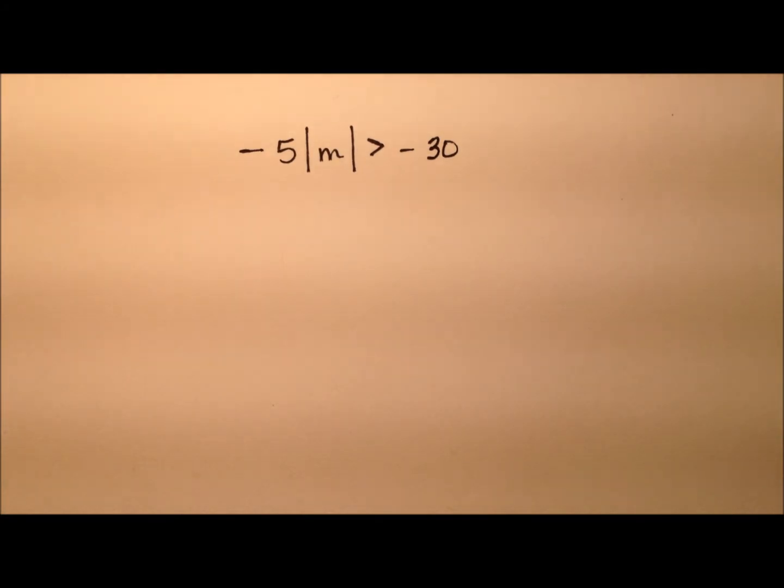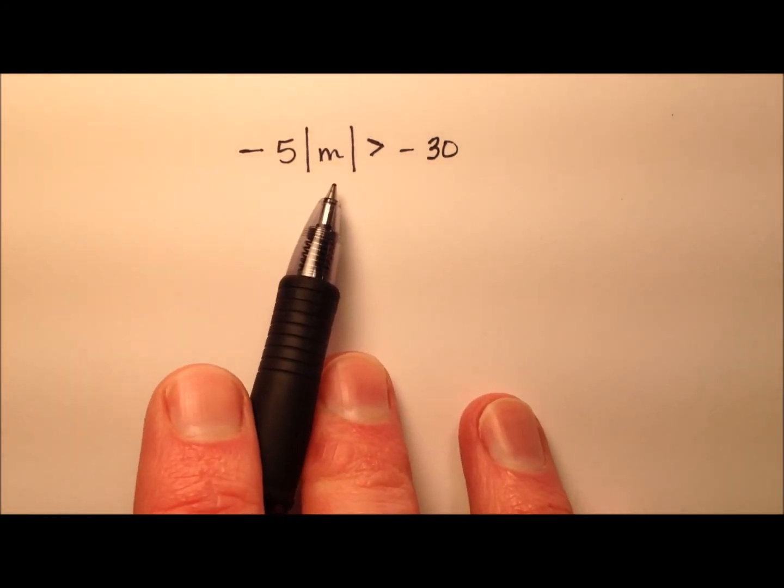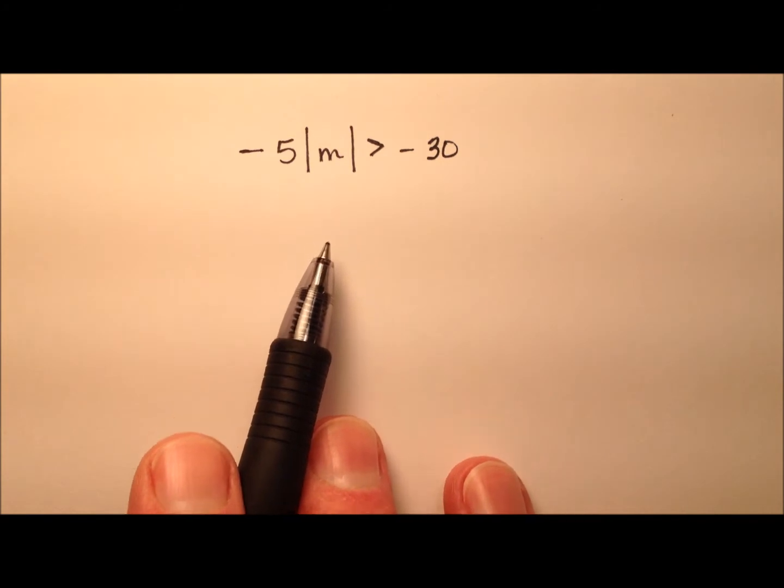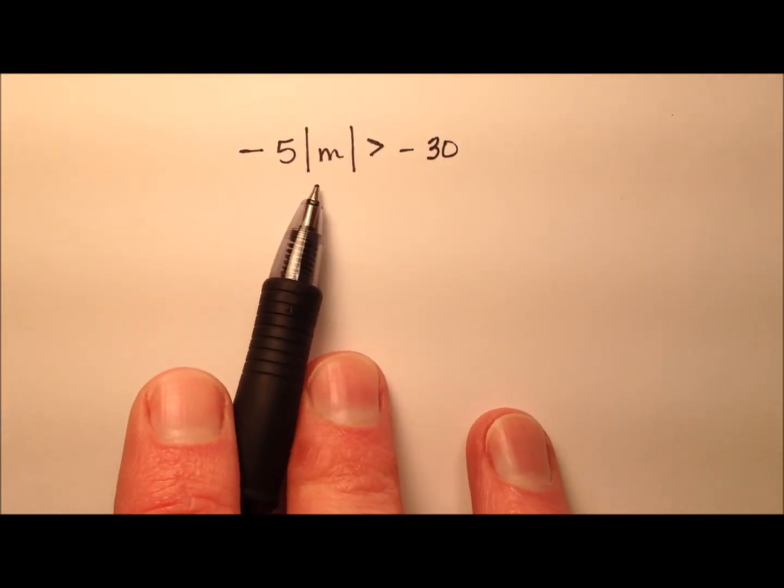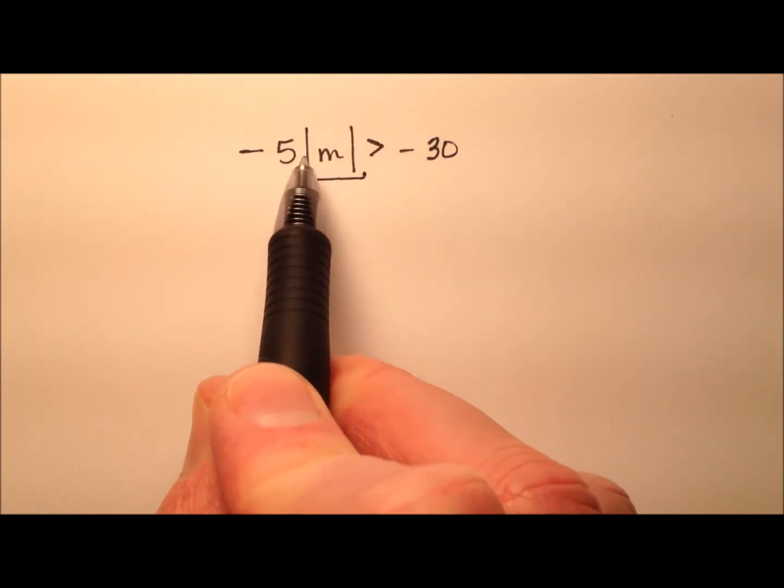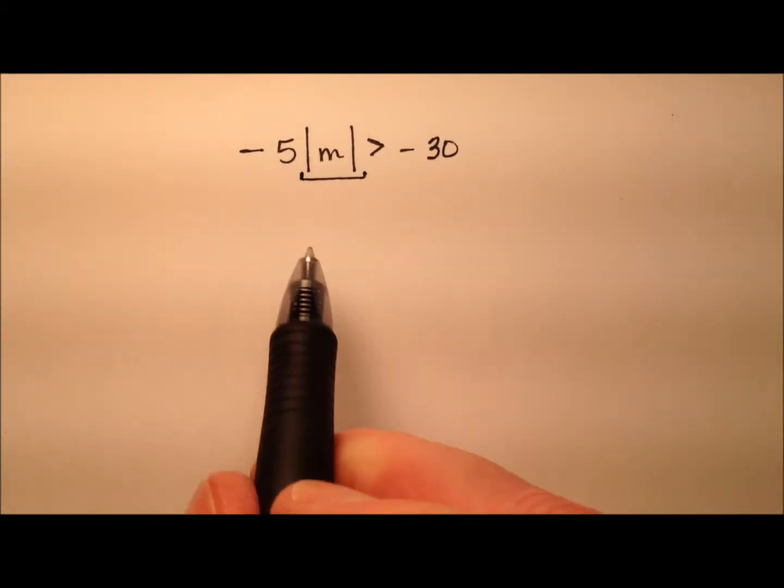In this example, we're going to solve and graph this absolute value inequality. So the first thing we need to do is to isolate this absolute value inequality expression. So this absolute value of m needs to be by itself.